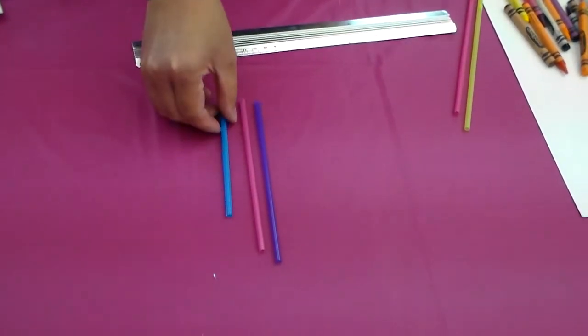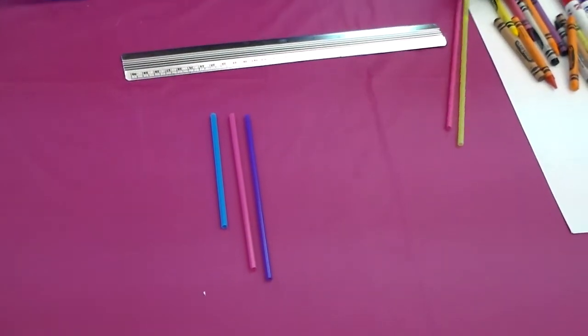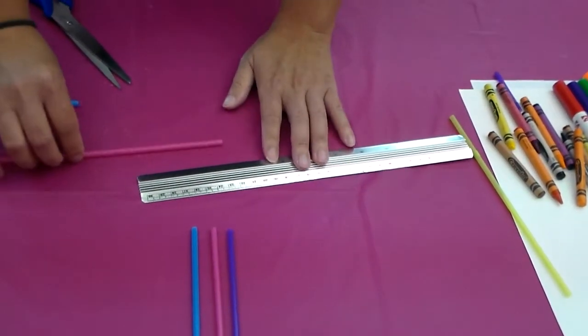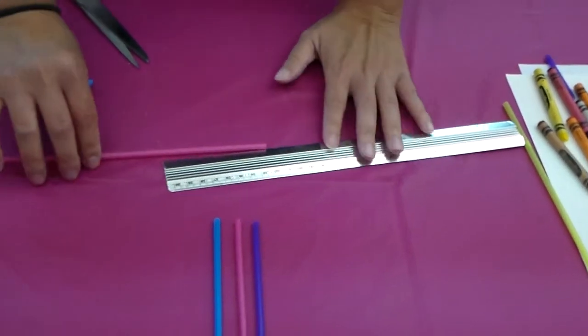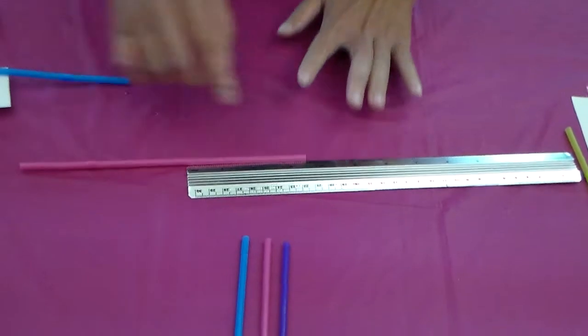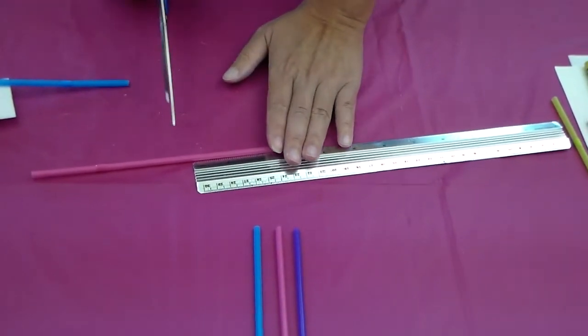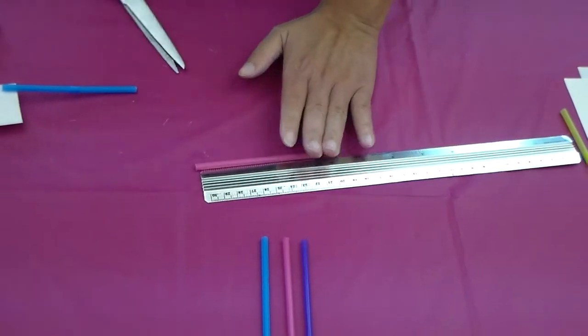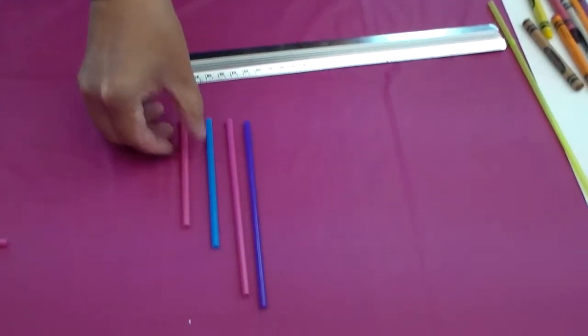Okay so we have the third one like that and then the fourth one it's going to be three and a half inches. So three and a half inches is between three and four inches. Okay so like so. Take your scissors and then you should have three and a half inches like that.